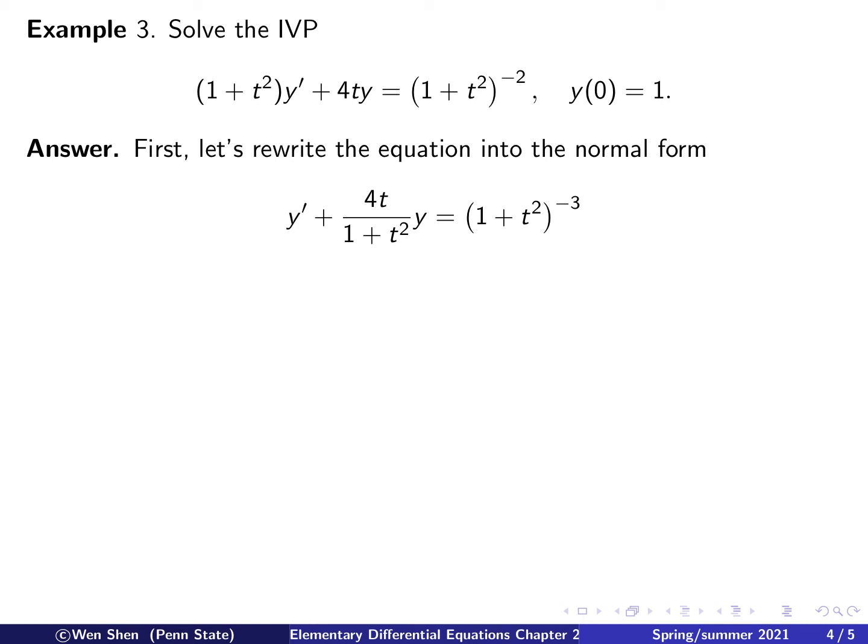No matter how it looks, we have the formula, and we can just write the equation into that standard form. The standard form has a constant 1 in front of y prime. So what we need to do is divide this equation on both sides with 1 plus t squared. We can always do that because 1 plus t squared is bigger than 1, it will never be 0.